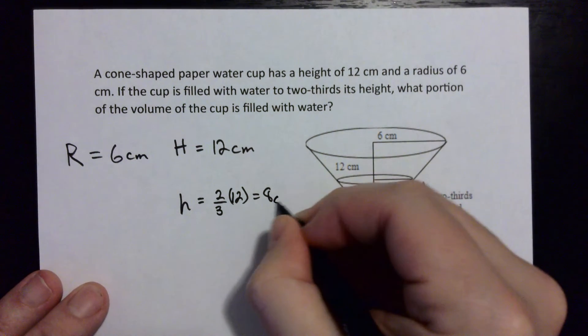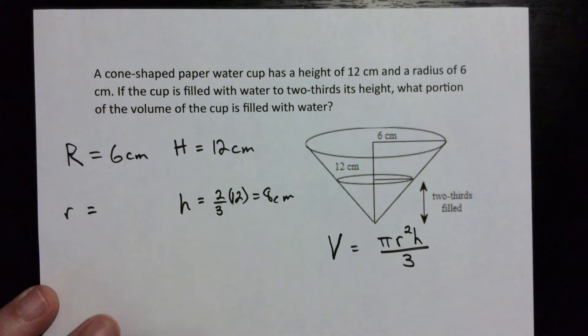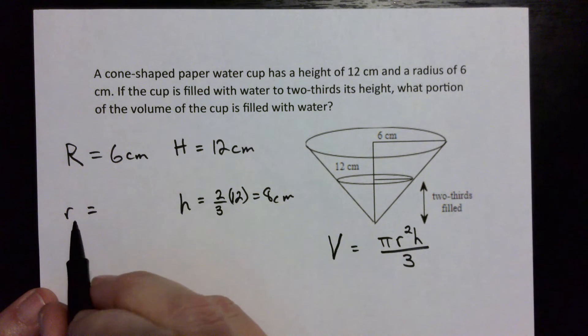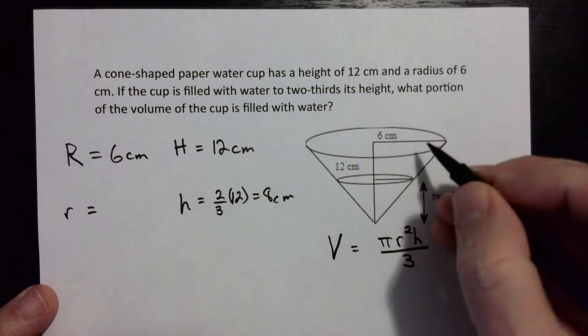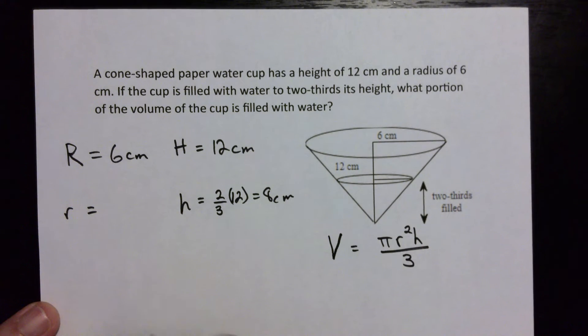Okay, and now to figure out little r we need to set up a proportion. Okay, so we can set up big R over big H and set it equal to little r over little h, because they're in the same shape, right, they're both cones, so they can be compared to one another.